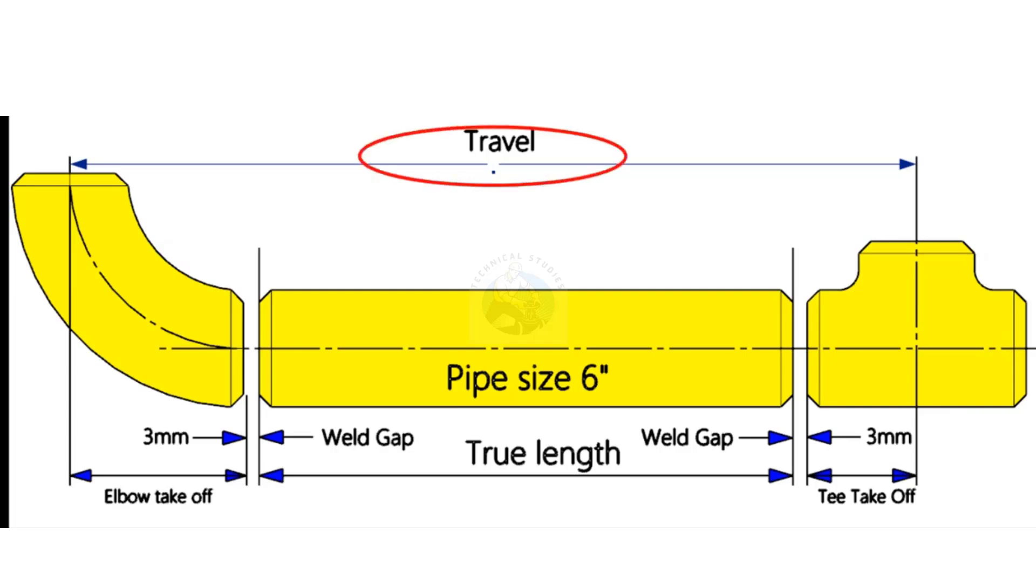The travel length, the takeoff length of the fittings, and the weld gap or the joint root gap. The travel length is given in the drawing, and the standard weld gap is three millimeters.